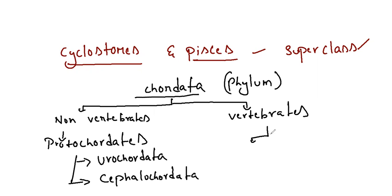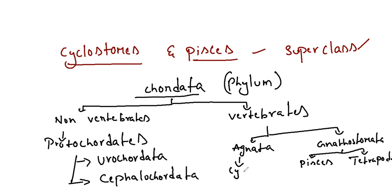Now vertebrates have been divided into two categories: Agnatha means no jaws, and next is Gnathostomata having jaws. Gnathostomata again has two divisions - one is Pisces which is fishes, and next is Tetrapoda. Under Agnatha you will be having cyclostomes, one class. This Pisces and Tetrapoda come under superclasses, and Agnatha and Gnathostomata are divisions of vertebrates.